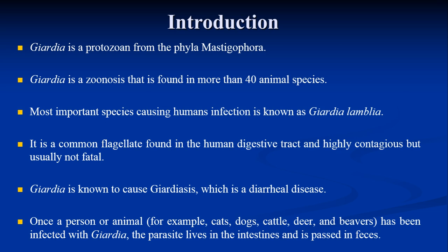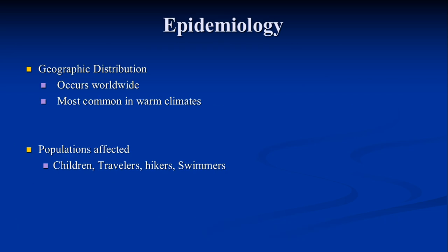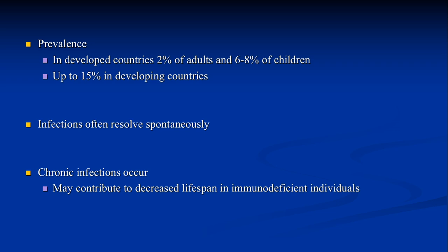Once a person or animal — for example cats, dogs, cattle — has been infected with Giardia, the parasite lives in the intestine and is passed in the feces. Epidemiology: it is worldwide and distributed in humans and animals. However, it is more common in warm climate places like India, Africa, and South America. It mainly affects children, travelers, hikers, and swimmers. It is highly prevalent in developing countries because of poor sanitation and hygienic conditions, where the prevalence rate is around 15 to 20 percent.